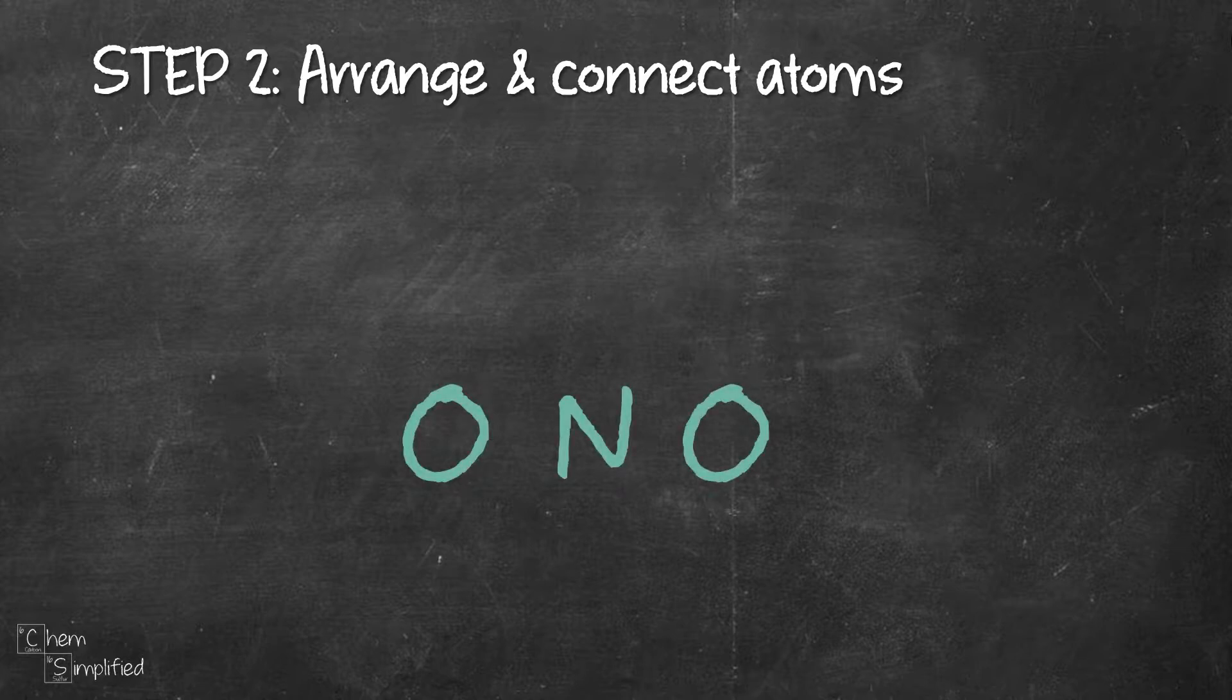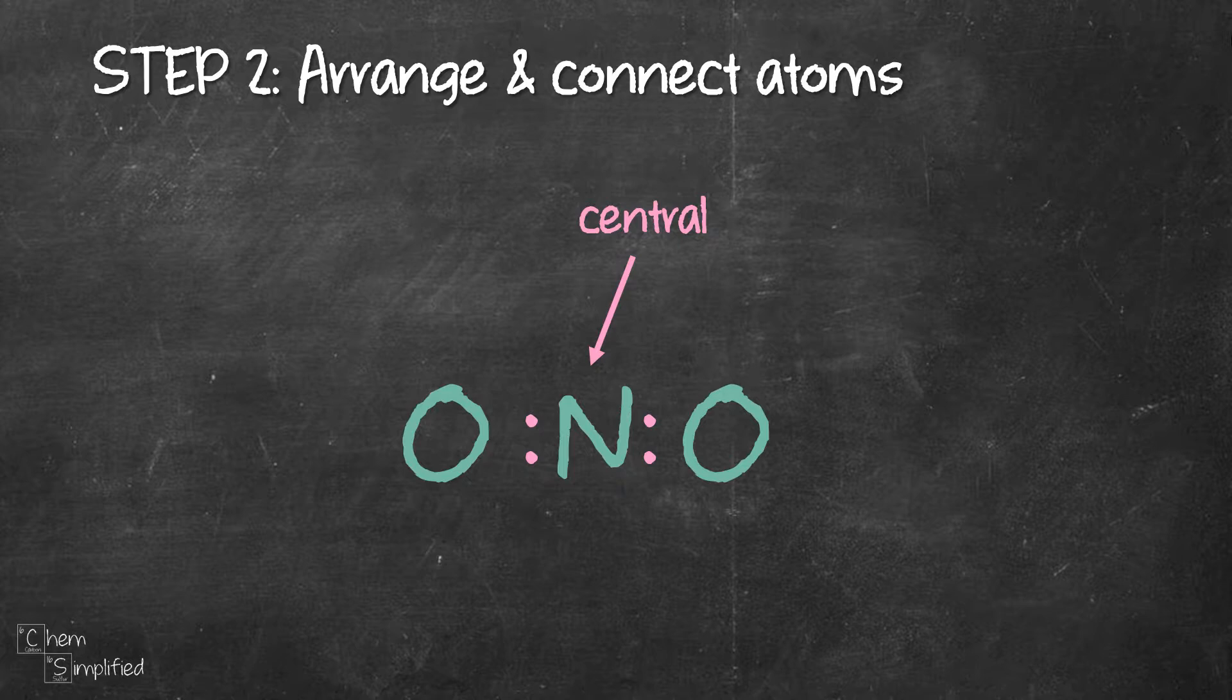So we have nitrogen in the center and we have oxygen on both sides. Now that we have oxygen surrounding the nitrogen, let's connect them using two electrons like this. Just to be clear, nitrogen is the central atom because it's in the center and oxygens are the terminal atoms because they are at the end.